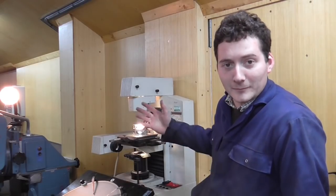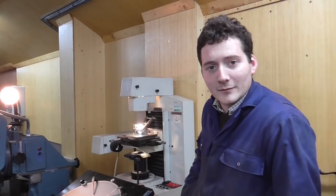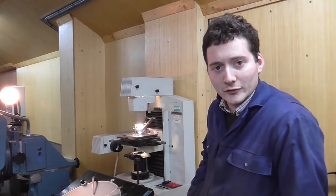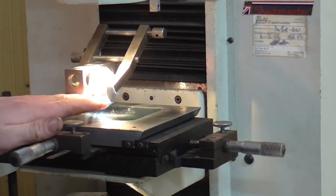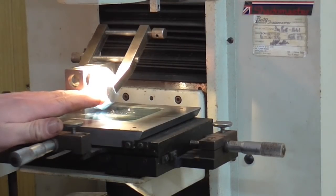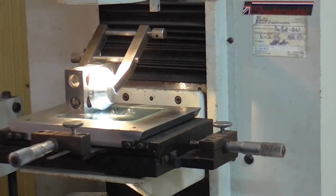And for his information this is a Shadow Master made by Baty, still in production, and you can get all the bits for them. So we'll now move on and I'll demonstrate the projecting of a component. So I'm winding the stage up until I get the center line of the component on the same plane as the lens's focal point, and that gives me a clear image on the screen.